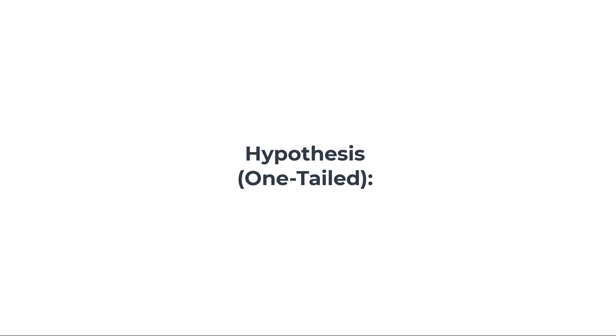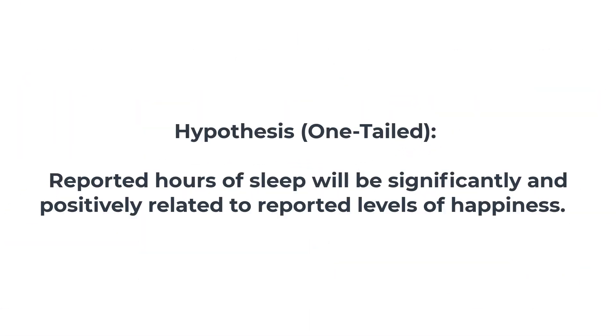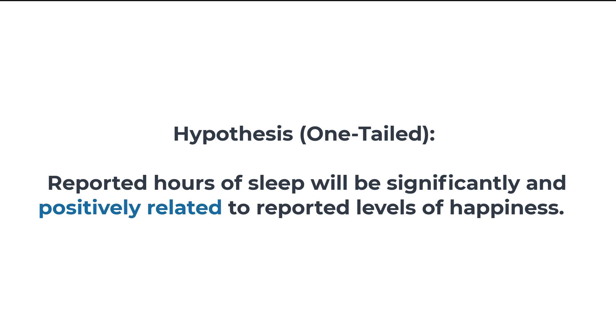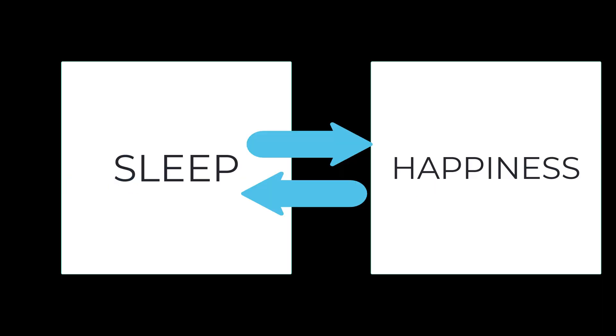For the second example, we will be looking at another relationship test. Our hypothesis is that reported hours of sleep will be significantly and positively related to reported levels of happiness. You will notice that this particular hypothesis uses the word related. In this example, we are looking at a correlation. Consequently, it is not as important to identify which variable is the independent and which is the dependent variable. Keep in mind that because this is a correlation, we are not able to determine a causal relationship. We can only predict that they are positively related. Remember that correlation doesn't equal causation.